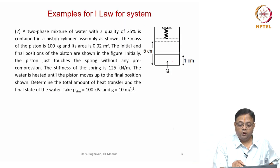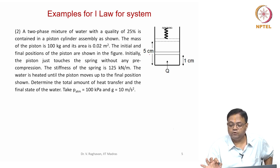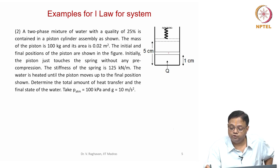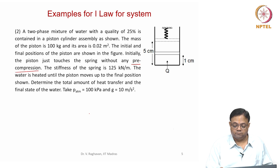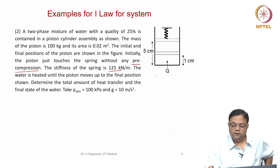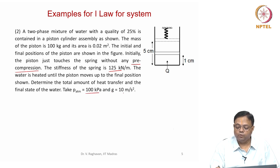Second problem: a two-phase mixture of water with quality 0.25 is in a piston-cylinder assembly. The mass of the piston is 100 kg and its area is 0.02 m². Initial and final positions are similar to the previous problem, but here there is a spring. Initially, the spring just touches the top surface of the piston without any pre-compression, so it exerts no force initially. The stiffness is 125 kN/m. The water is heated and the piston moves up to 5 cm from the bottom, compressing the spring by 4 cm. Atmospheric pressure is 100 kPa and g = 10 m/s².